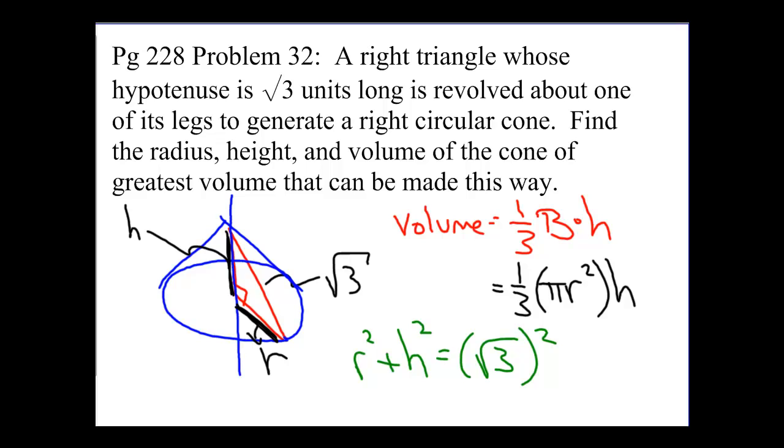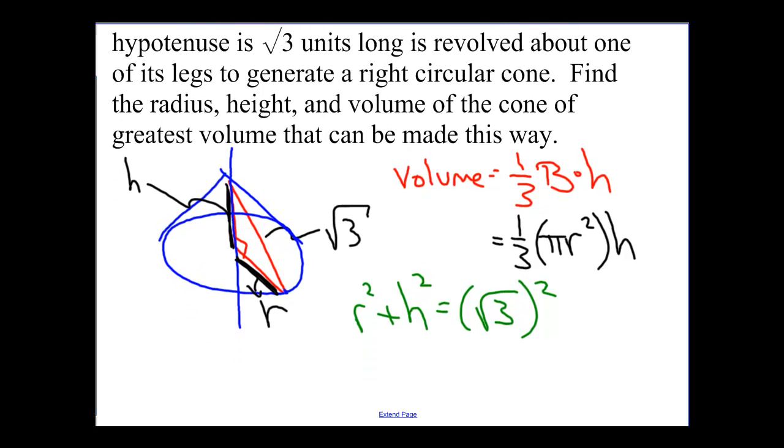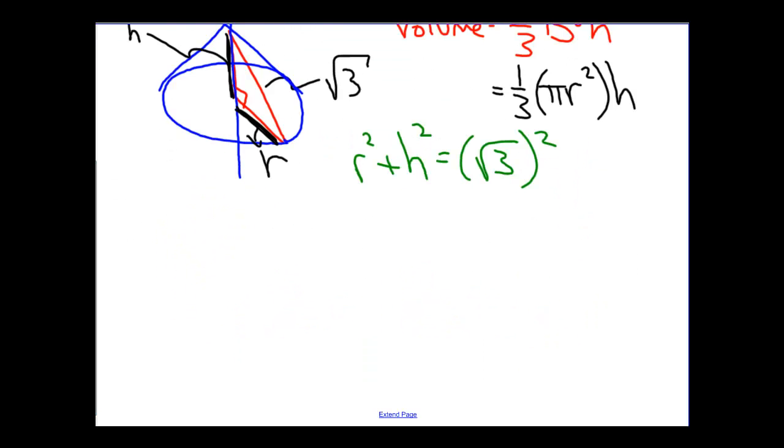That's simply the Pythagorean theorem written for the right triangle that we've been given in this problem. This will allow us to choose values of R and H from any values that we would like, but they'll be values that satisfy this constraint and guarantee that we have the right kind of triangle. Let's go ahead and simplify this Pythagorean theorem expression. This looks like R squared plus H squared is equal to 3.